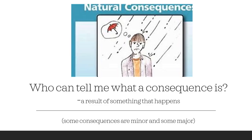Who can tell me what a consequence is? A consequence is a result or an effect of something that happens. The decisions you make often have consequences. For example, if you don't set your alarm clock it won't ring, you might oversleep, miss the bus, and be late for school — all consequences of not setting your alarm. Consequences aren't all negative. If you study hard for a test you'll most likely get a good grade — that's a positive consequence of making a good decision.